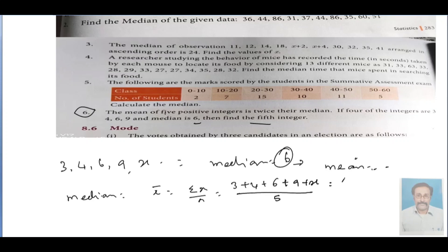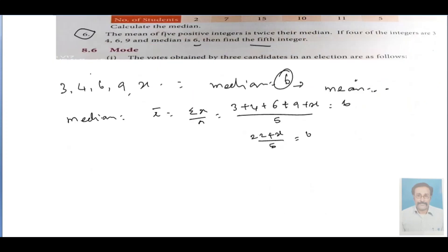So: 22 plus x divided by 5 equals 6. Therefore 22 plus x equals 30. Therefore x equals 30 minus 22, which equals 8.